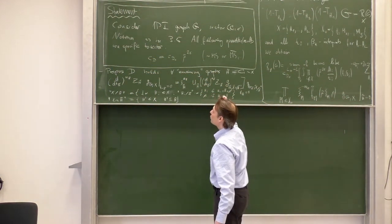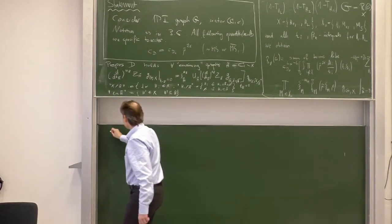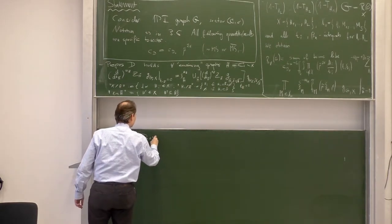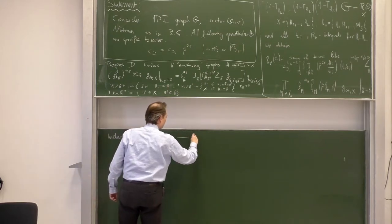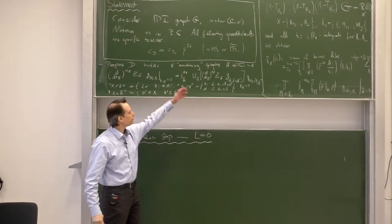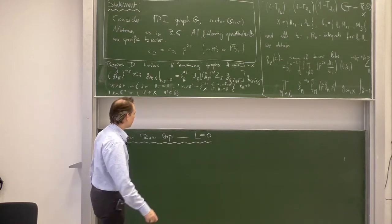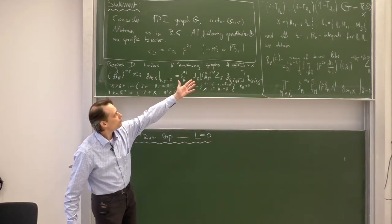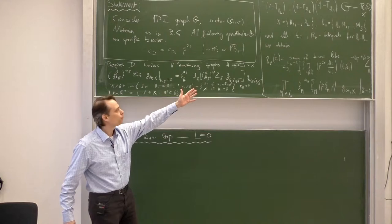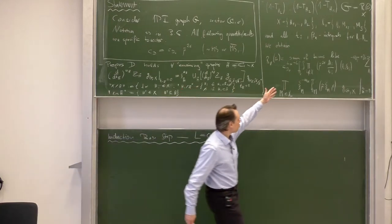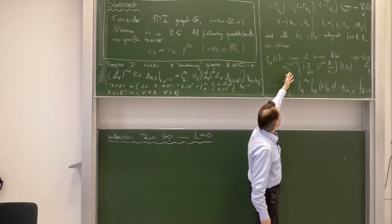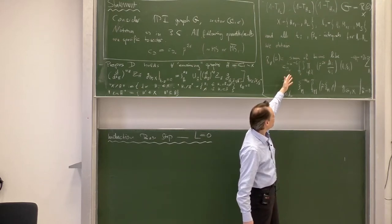First we need to do our base step, which means we set L equals 0 and prove that everything we stated before is true. L equals 0 means that in our chain of treated subgraphs, no graph at all is treated — we are just at the level of the full graph G. For our full graph G, we need to prove that this is the way we can write our integral, and no integrals have been carried out, so this is just the full expression.